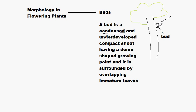The word condensed means: when this bud grows little by little, it will form a branch, which may have another branch that can have a leaf, a flower, more leaves, a fruit, so many things. It is such a small structure. So the word condensed means many things are tightly packed into a small space — so many things which are going to develop are packed into that small bud.